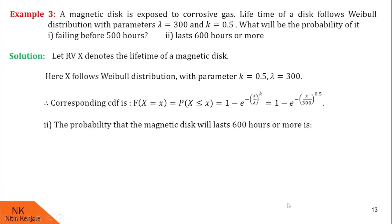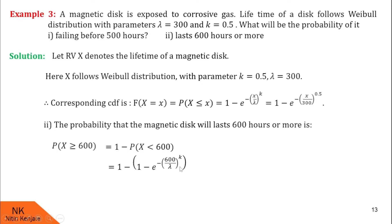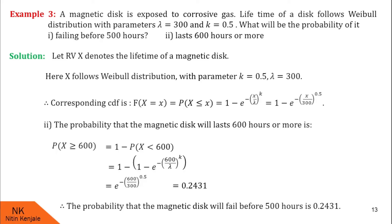Next we calculate the probability that the magnetic disk will last 600 hours or more, denoted P(X ≥ 600). Using the complement formula, P(X ≥ 600) = 1 minus P(X < 600). P(X < 600) = 1 minus e^(−(600/300)^0.5), which calculates to 0.2431. Therefore the probability that the magnetic disk will last 600 hours or more is 0.2431.